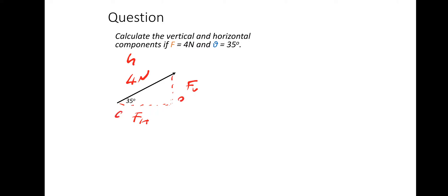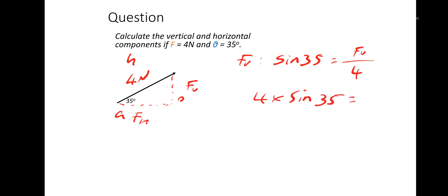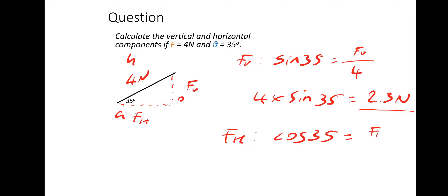I'll label it up: hypotenuse, opposite, and adjacent. I'll do Fv first — the vertical force. That would be opposite and hypotenuse, so that is sine of the angle: sine 35 equals opposite over hypotenuse, so force vertical divided by the hypotenuse of 4. The vertical force is simply 4 times sine 35, which gives 2.3 newtons. Then for the horizontal force Fh — that's adjacent and we've got the hypotenuse, so that would be cos of the angle: cos 35 equals the horizontal force divided by 4. So 4 times cos 35 gives 3.3 newtons.